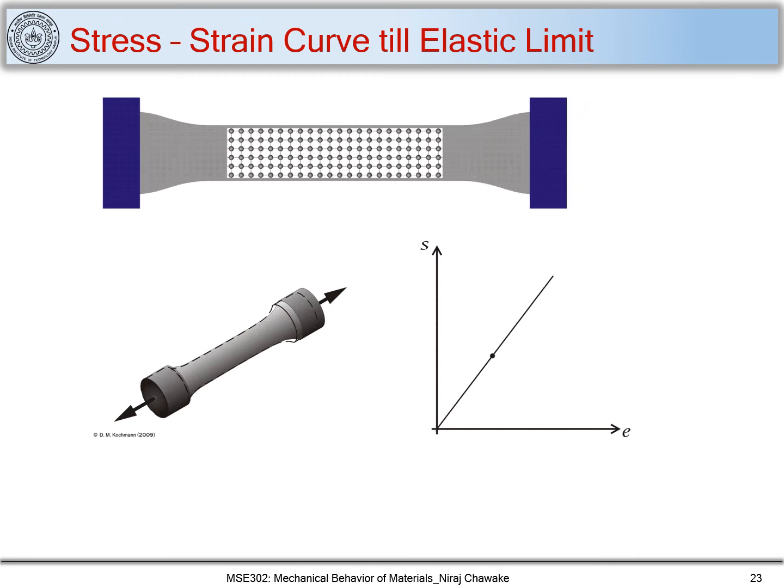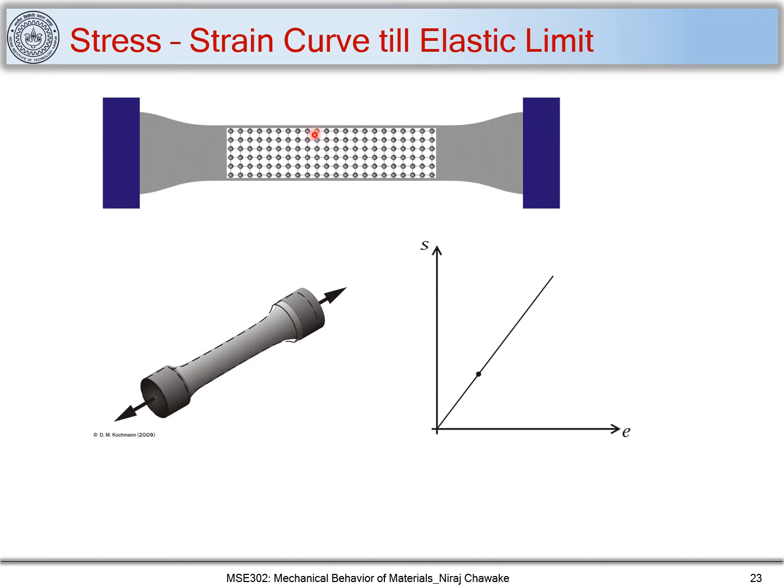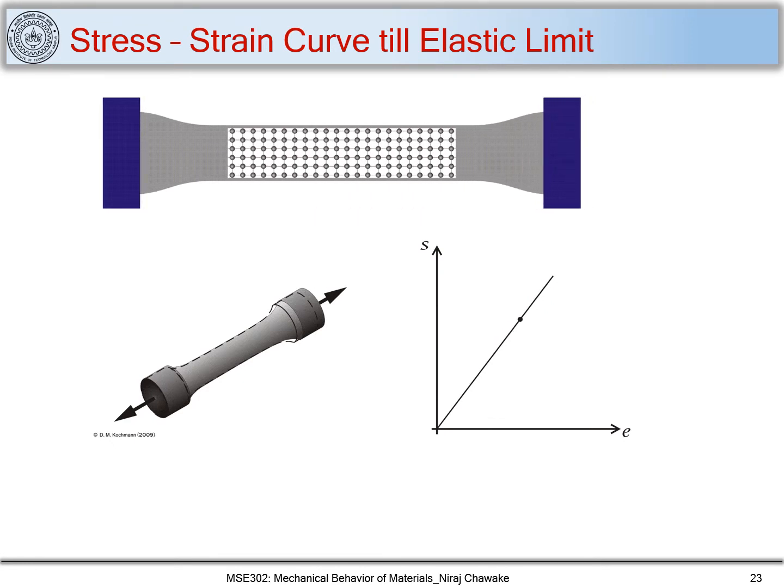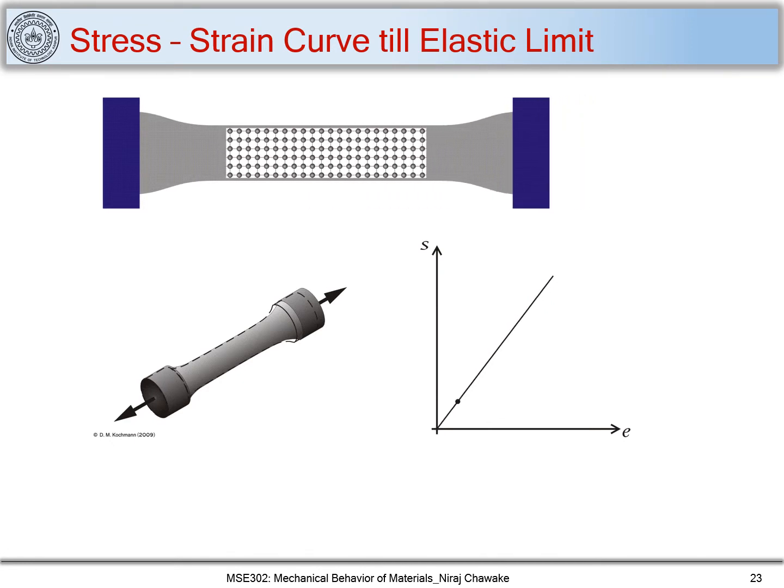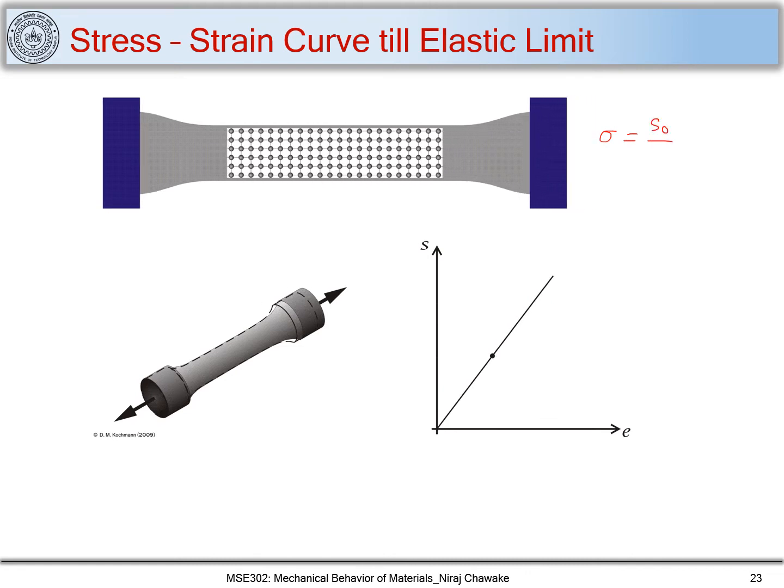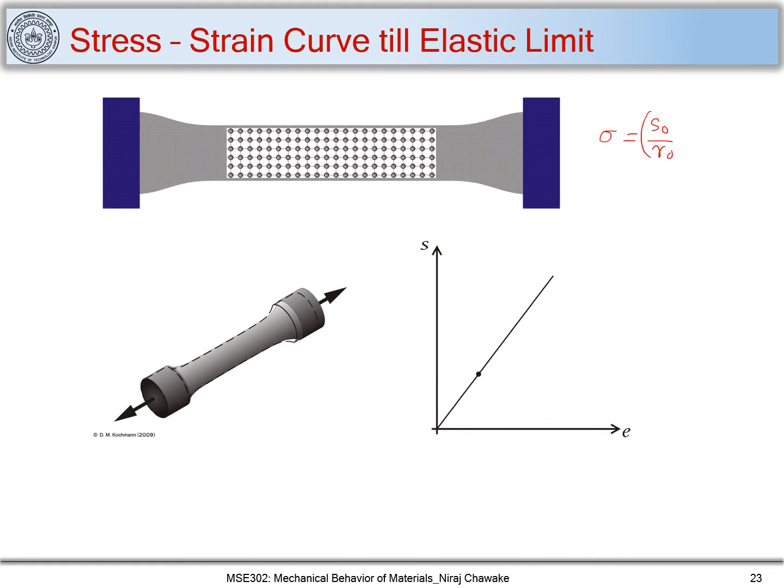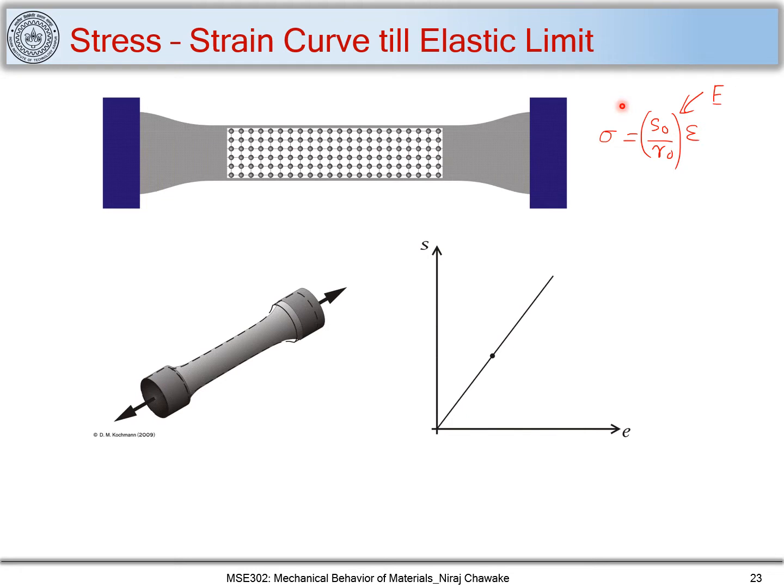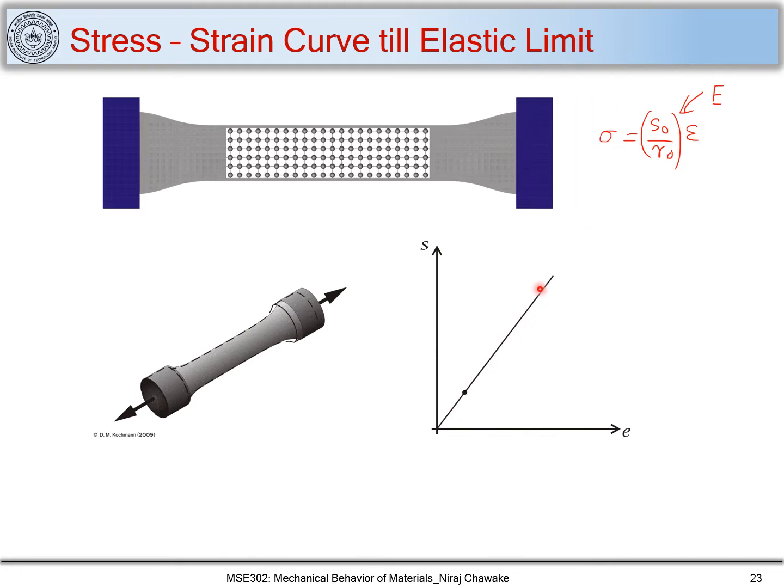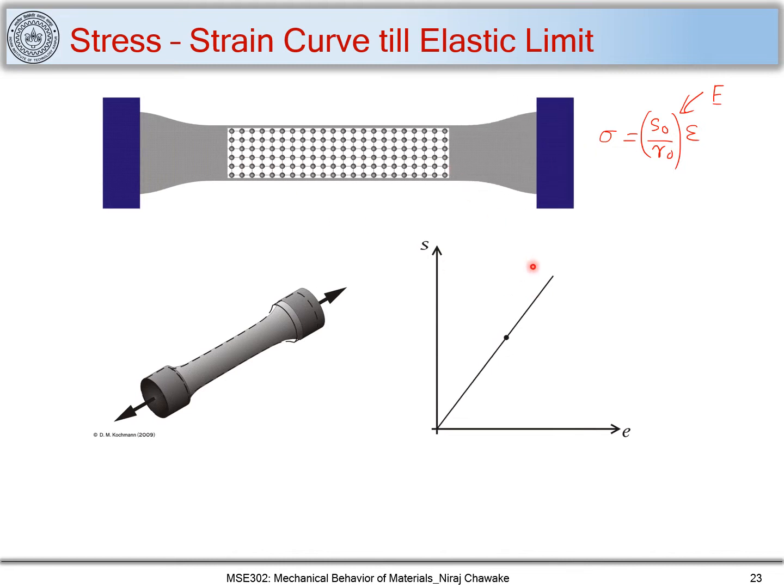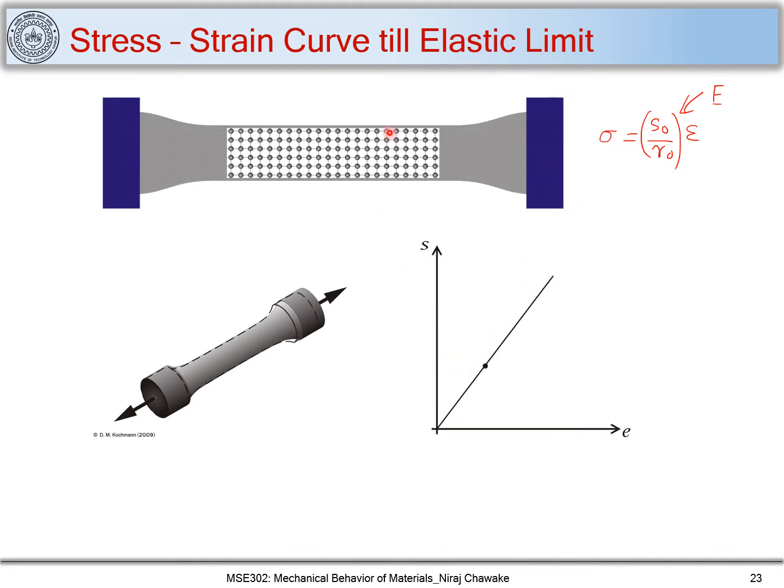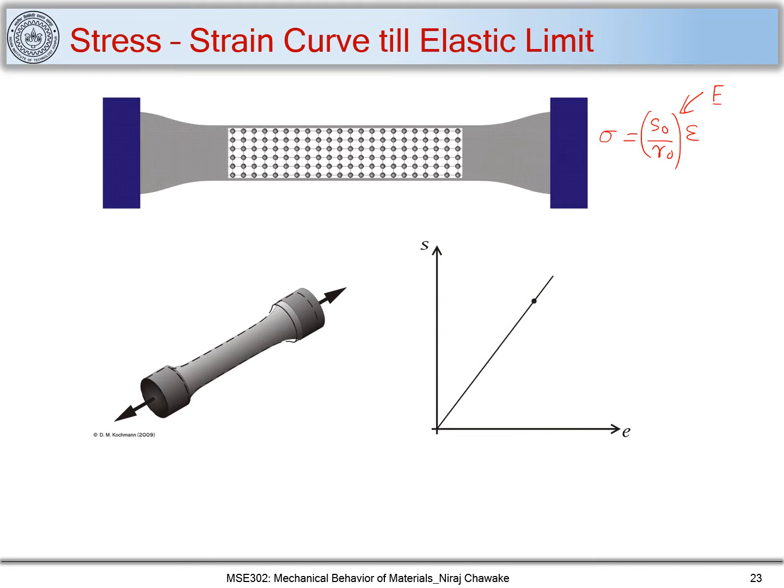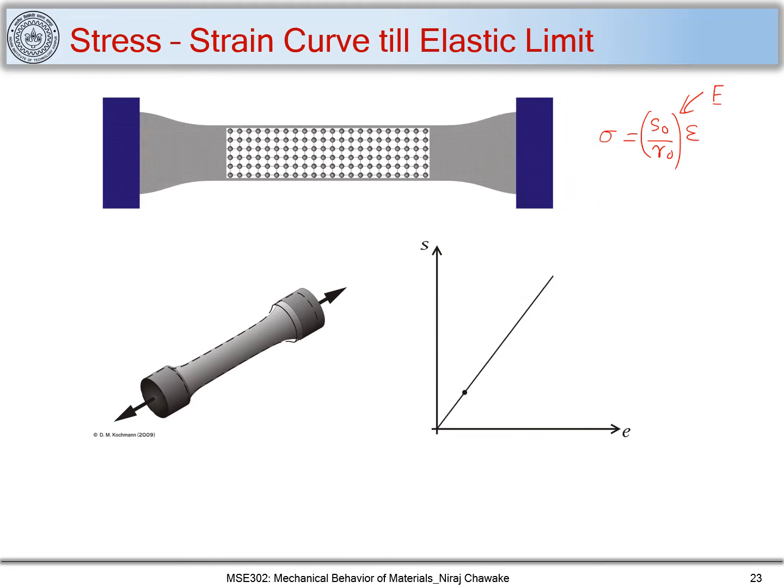In our earlier class we have seen the relationship between stress, bond stiffness, equi-atomic distance and strain. We termed S naught upon R naught as Young's modulus. When I'm stretching my material in the elastic region, the bonds are getting stretched, and when I release that, the bonds are getting relaxed and then going to their original positions.